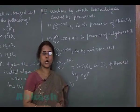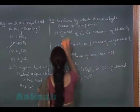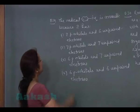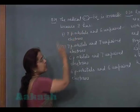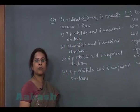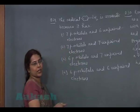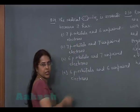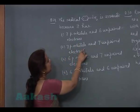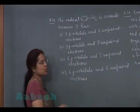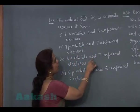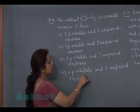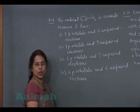Next question is question number 29. The radical is aromatic because it has. Here the given radical is called benzyl free radical. This is aromatic. Now the first option 7p orbital and 6 unpaired electrons. Second option 7p orbitals and 7 unpaired electrons. Third option 6p orbital and 7 unpaired electrons. Fourth option 6p orbital and 6 unpaired electrons.